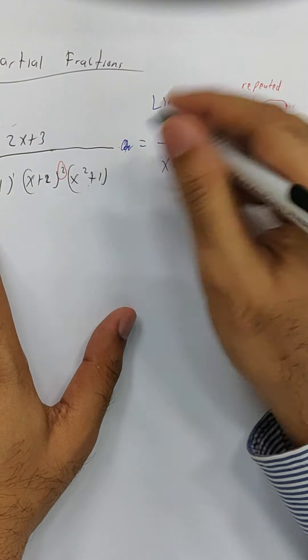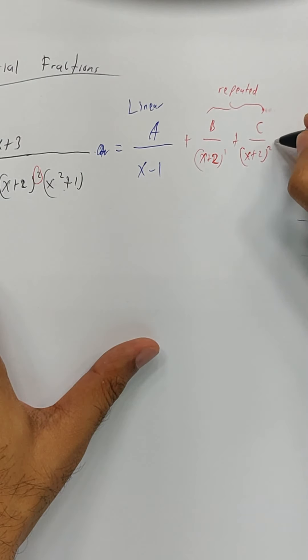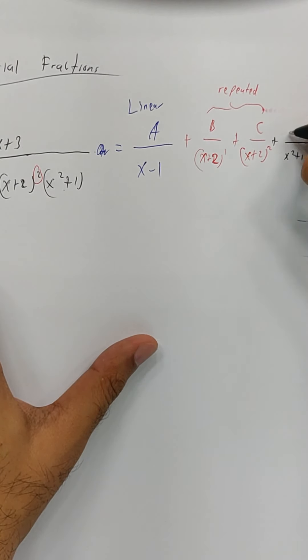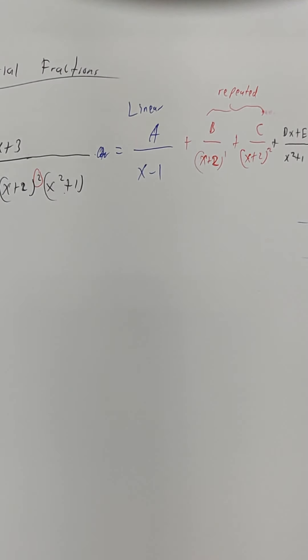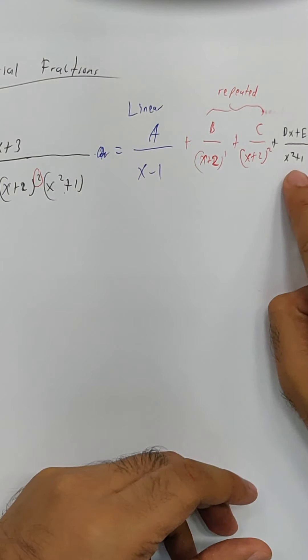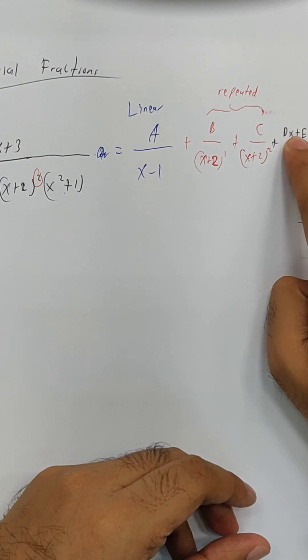And the final one is this one here, plus x squared plus 1. Okay, what's the next letter? D. This is squared, right? So up here is linear: dx plus e. We just want 1 degree down. This is squared, we go linear here, 1 degree down.